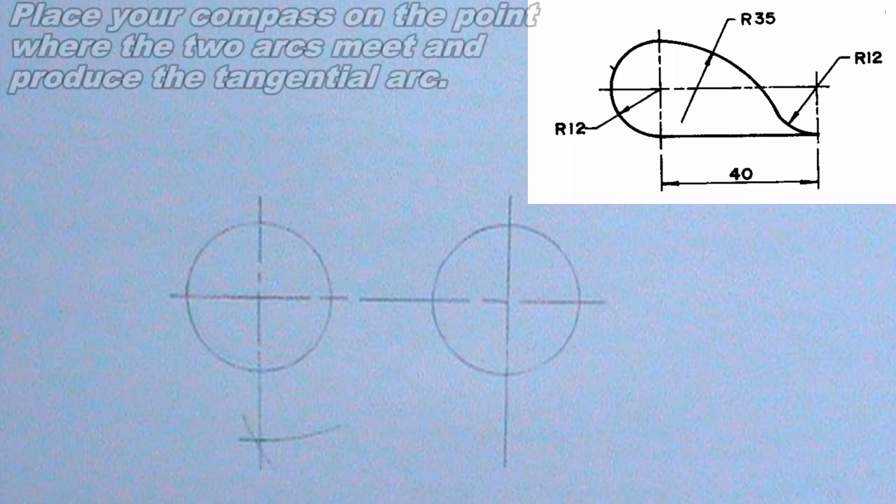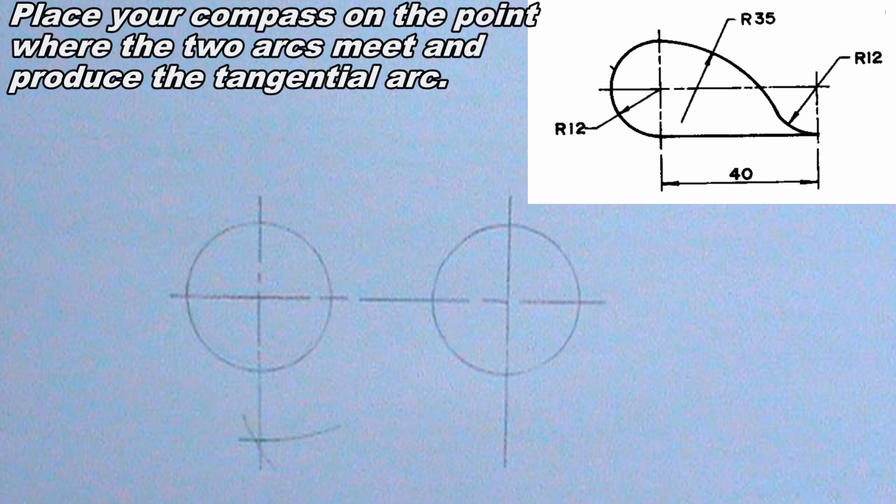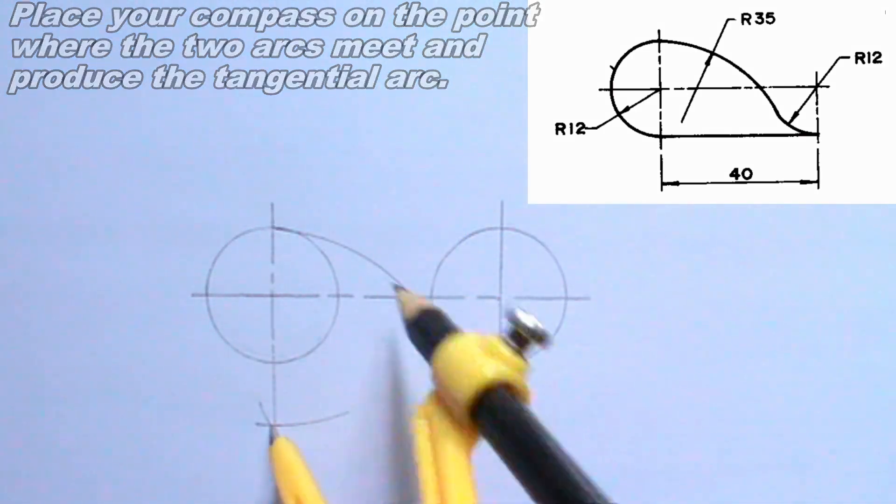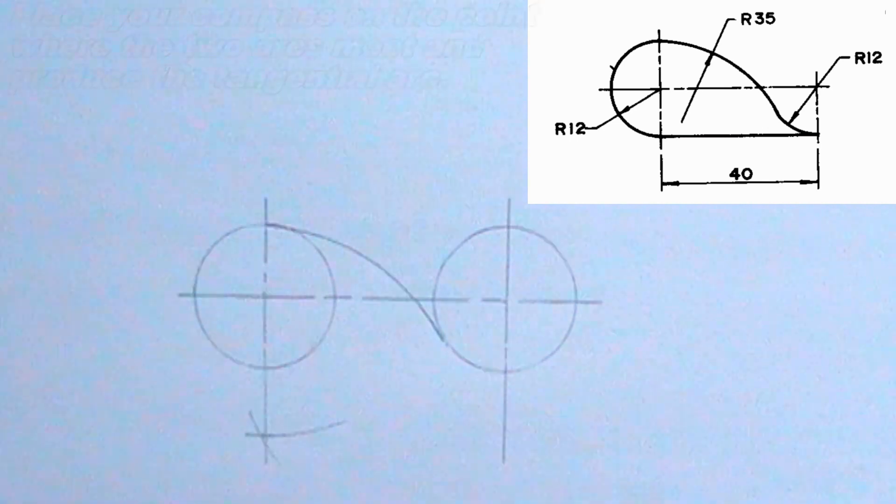Next, I will place my compass on the point where the two arcs meet, then I will produce the tangential arc. I will do so using my compass with radius 35 millimeters.